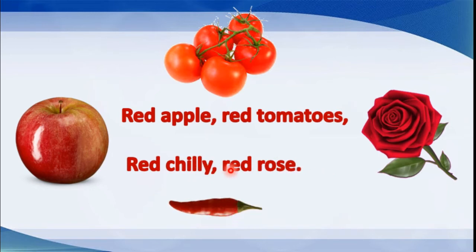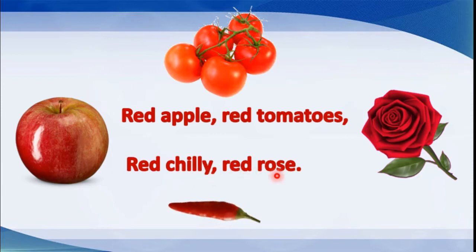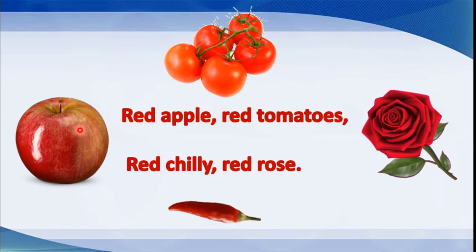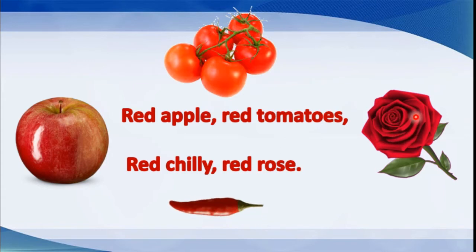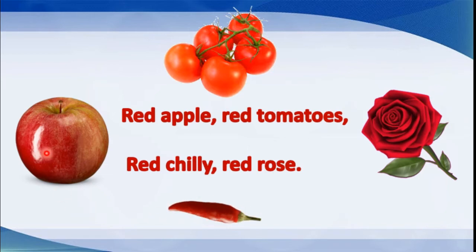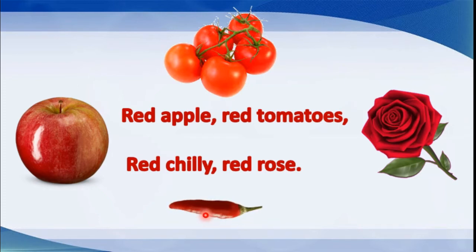Red chili, red rose. This is chili - mirchi - that is red chili. And red rose - gulab. Here four things are there and they have red color. Apple is red, tomatoes are red, rose is red, and chili has red color. Now we can identify two colors - green and red.